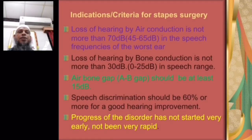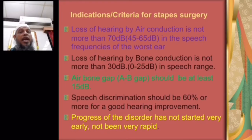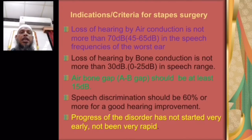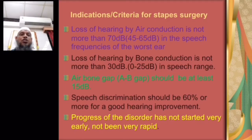Indications/criteria for stapes surgery: loss of hearing by air conduction should not be more than 70 dB — the range is 45–65 dB in the speech frequencies of the worse ear. Loss of hearing by bone conduction should not be more than 30 dB in the speech range. The air-bone gap should be at least 15 dB, speech discrimination should be 60% or more for good hearing improvement, and the progress of the disorder should not be very rapid.